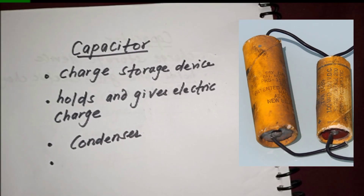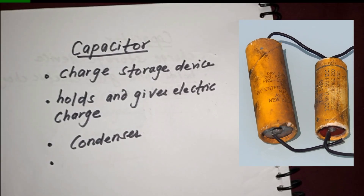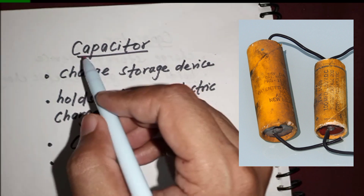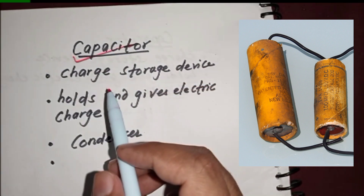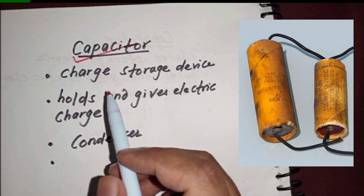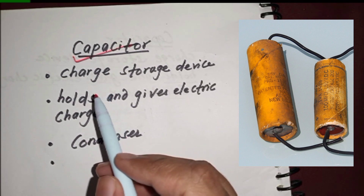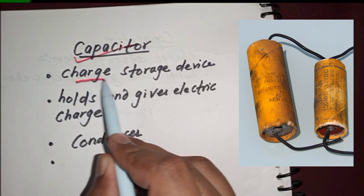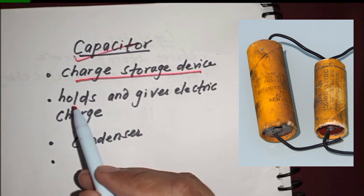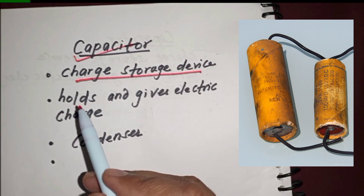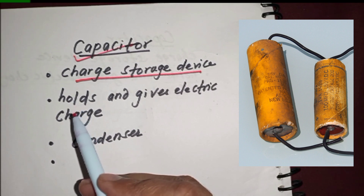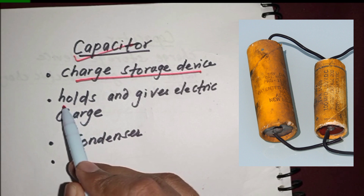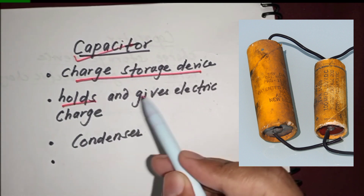Welcome to my channel Electrical Globe. In this video we will discuss about capacitors in an electrical circuit. A capacitor acts as a charge storage device — when we apply voltage across a capacitor, it holds electric charge.